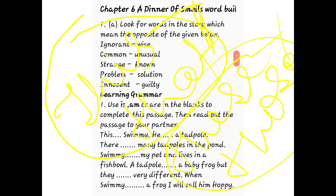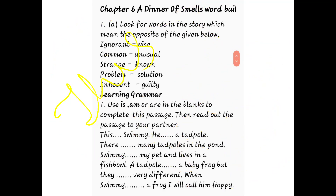When two or more things are nearby, we use 'these'; when two or more things are far, we use 'those.' So 'this' and 'that' are singular, and 'these' and 'those' are plural. Since 'this' is here, we will put 'is' — 'This is Swimmy.'